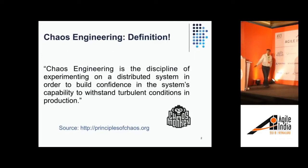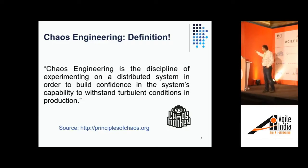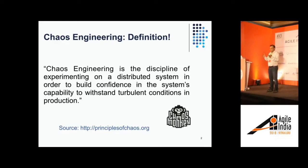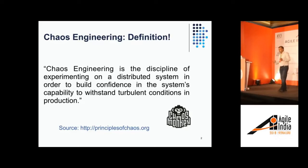I'll start with the definition of chaos engineering. What is chaos engineering? There's a wonderful website, principlesofchaos.org, and that has the textbook definition of chaos engineering. You'll also see a tool called Chaos Monkey — that's a tool Netflix originated with chaos engineering. But what chaos engineering essentially is, is live experimentation on your distributed system. The goal of that experiment is to learn and understand the failure points of your distributed system and to provide a guideline on the areas you can improve upon.